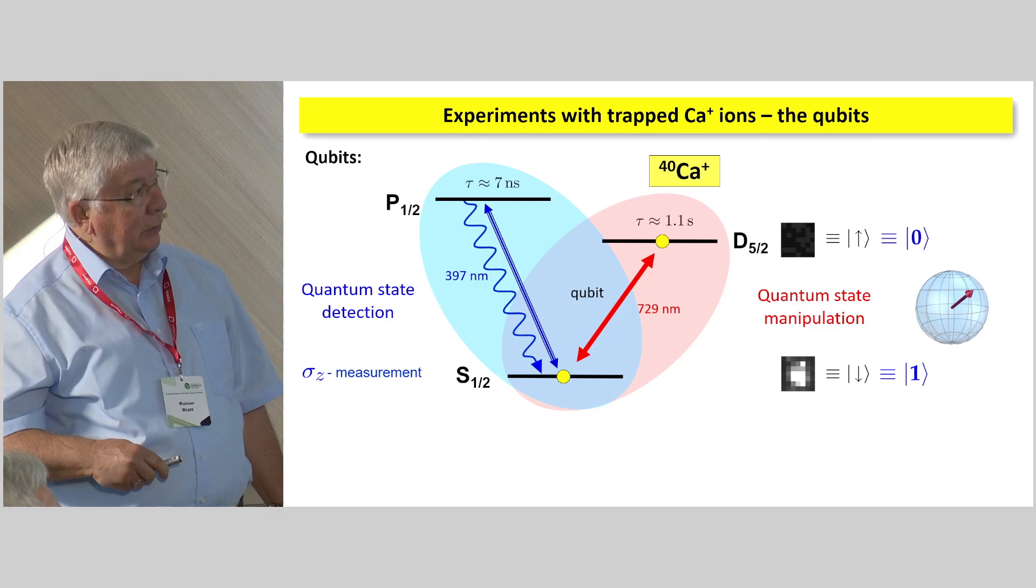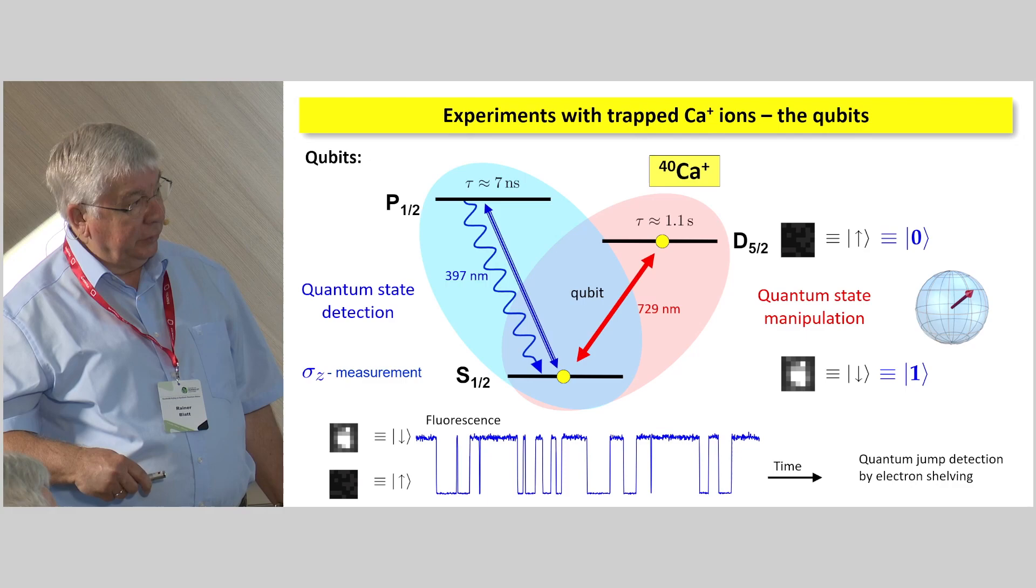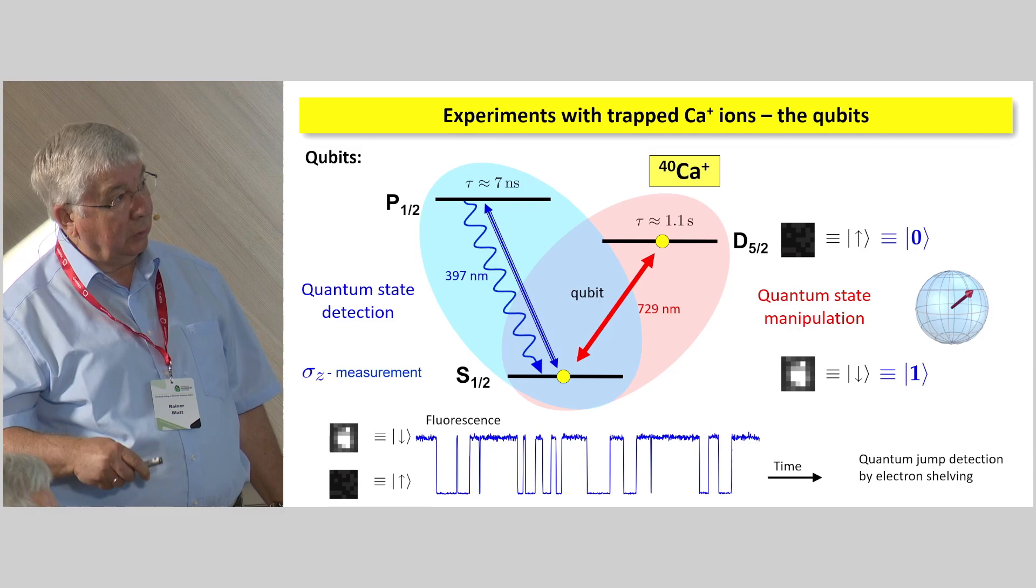And this allows us to do the proverbial sigma-z measurements or this quantum jump detection. We see, really, the jumps going back and forth between these things. And this is done by electron shelving, as we call it after Hans-Dehmelt, with nearly 100% efficiency.